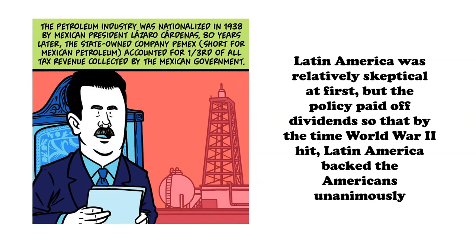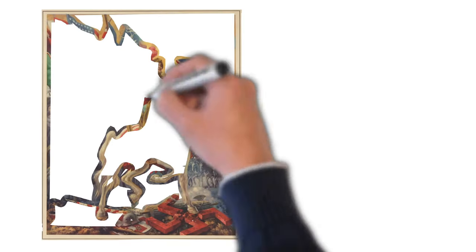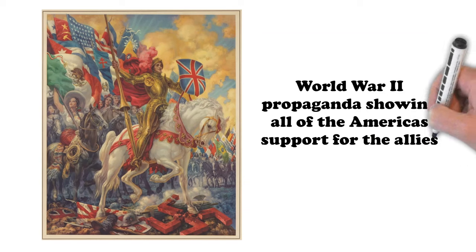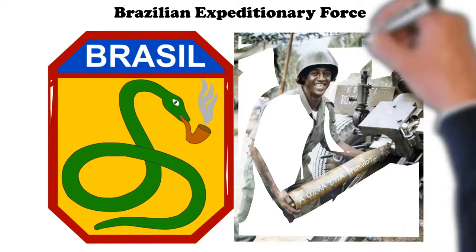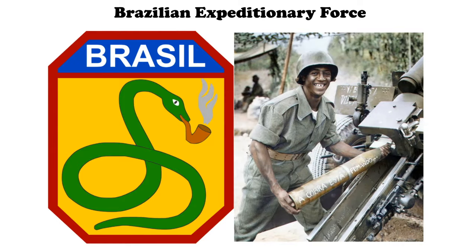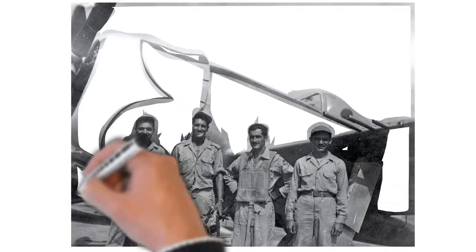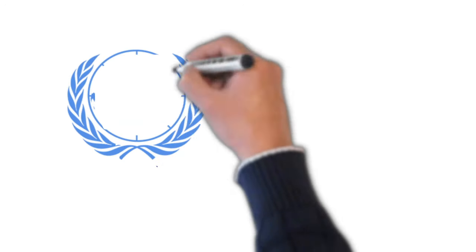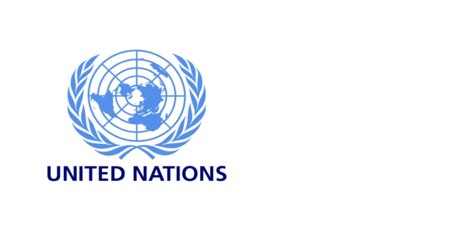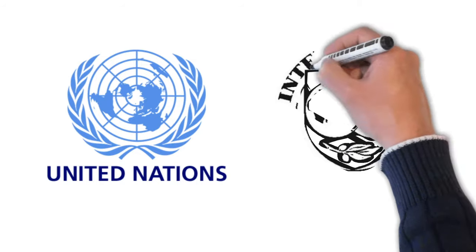By the time World War II hit, Latin America backed the Americans unanimously — though some like Paraguay and Argentina only did so near the end of the war. Countries around the Panama Canal, including Colombia, Venezuela, and all of Central America and the Caribbean, were all staunch allies. Brazil and Mexico also sent troops: the Brazilians sent a 26,000-strong expeditionary force that saw action in Italy and had around 1,000 casualties, while the Mexicans sent an Air Force squadron that had 96 combat missions over the Pacific and lost three pilots. The end of World War II marked the highest point in U.S.-Latin American relations, as every Latin American state became a founding member of the United Nations.